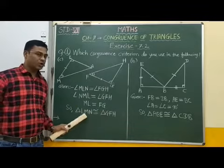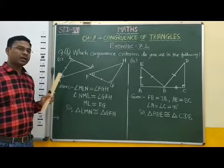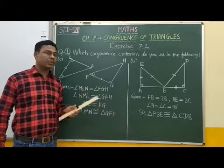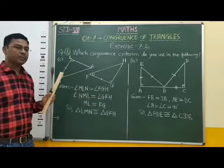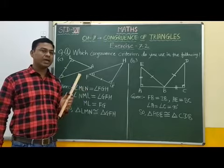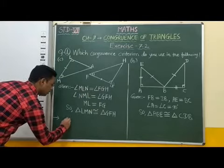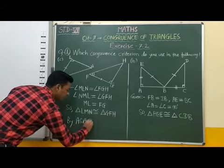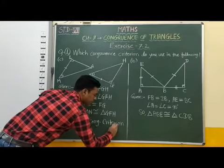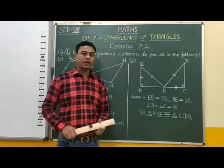Therefore, students, we observe here that two angles and the included side of one triangle are equal to the corresponding two angles and included side of another triangle. Therefore, these two triangles are congruent by the Angle-Side-Angle congruence criterion — the ASA congruence rule. By ASA congruence criterion, these two triangles are congruent.